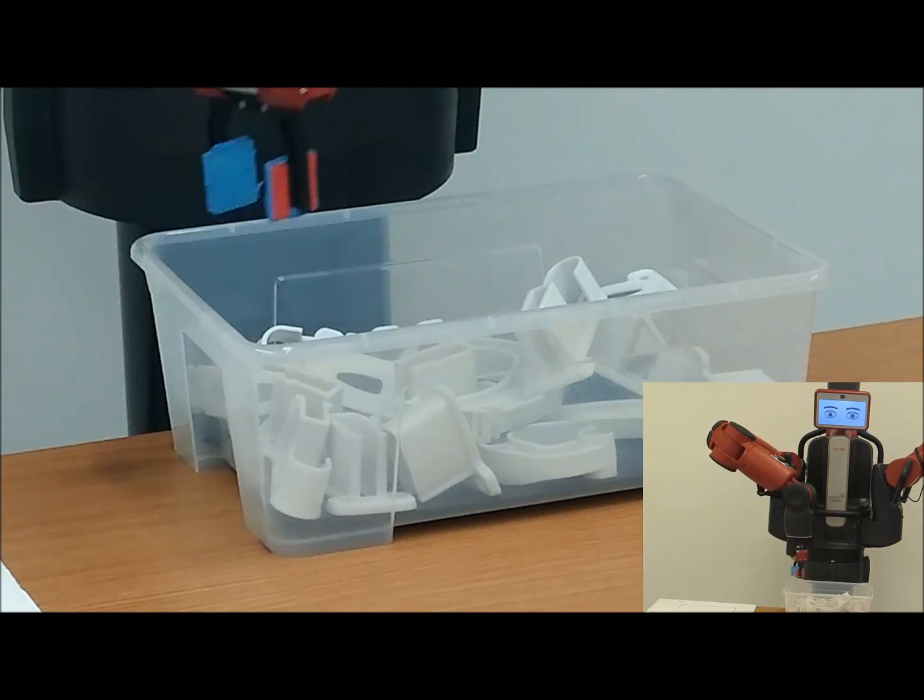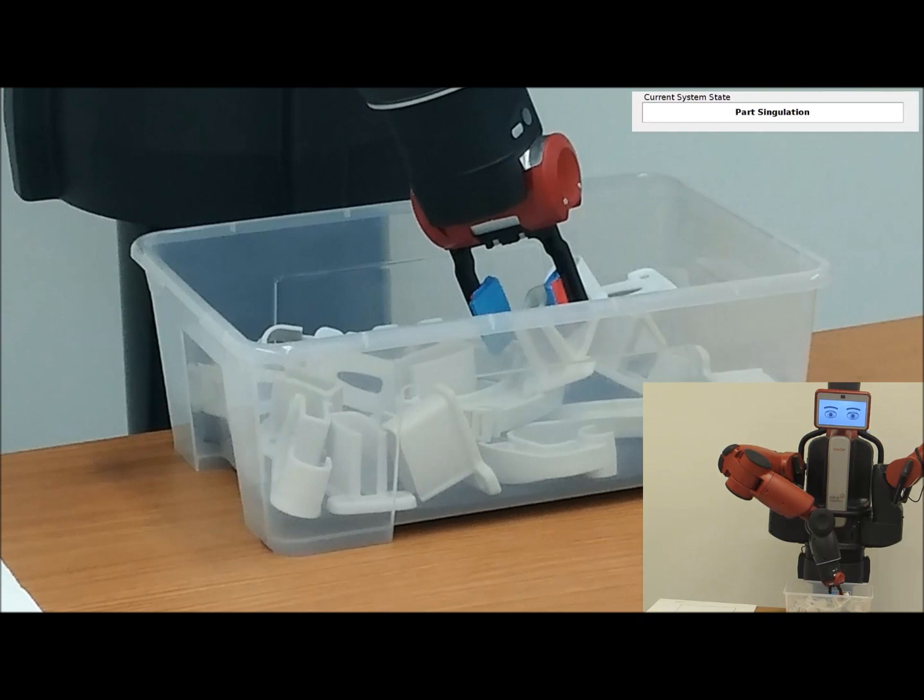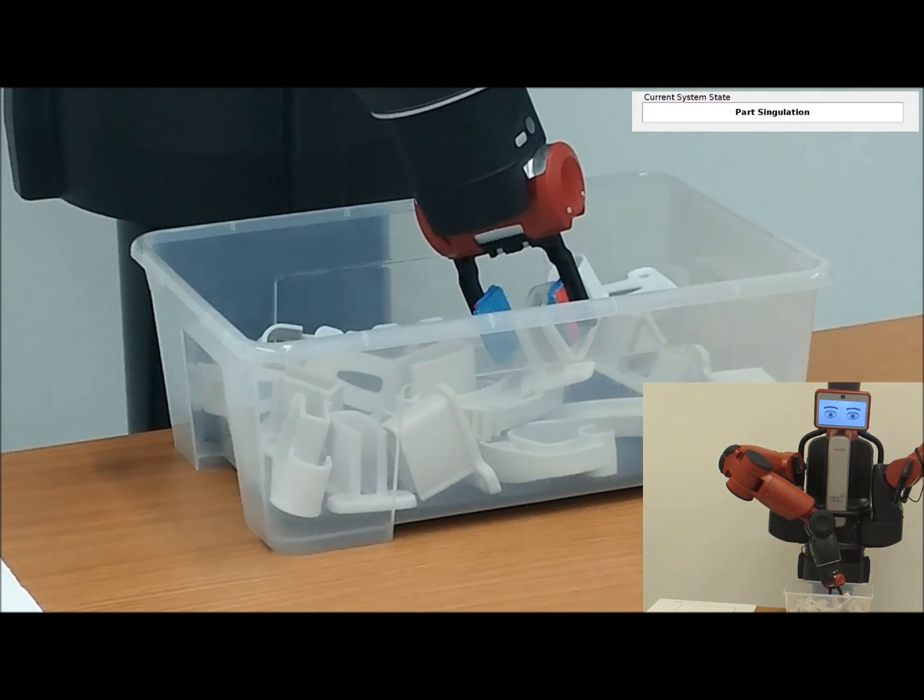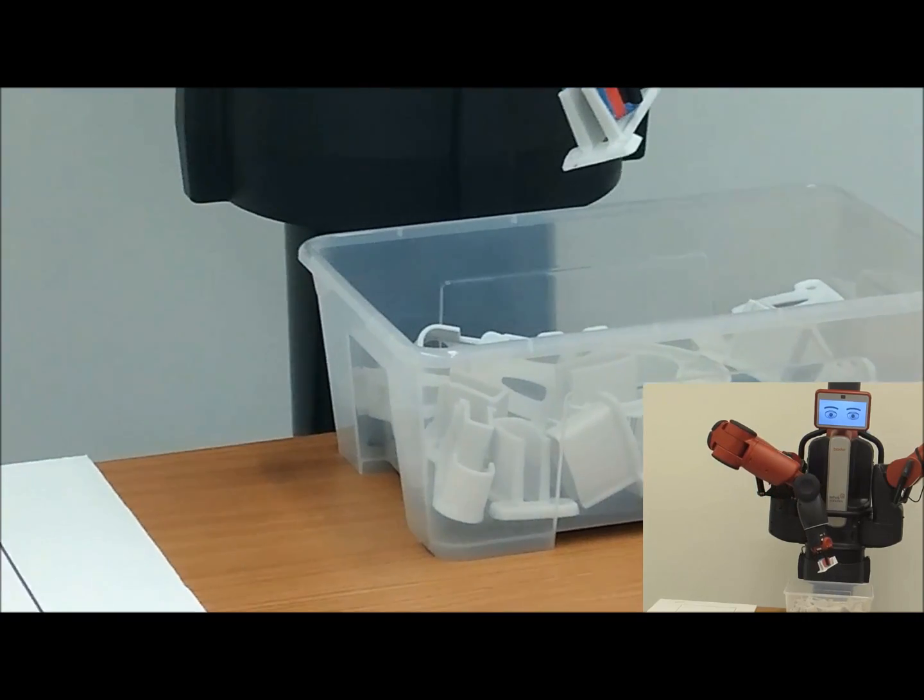RoboSAM then plans the gripper motions to ensure that the desired part can be extracted from the bin without colliding with anything else. It also plans its moves to place the part at the desired location.